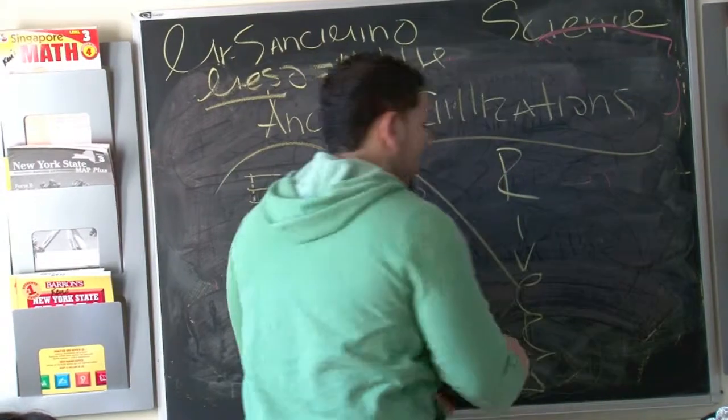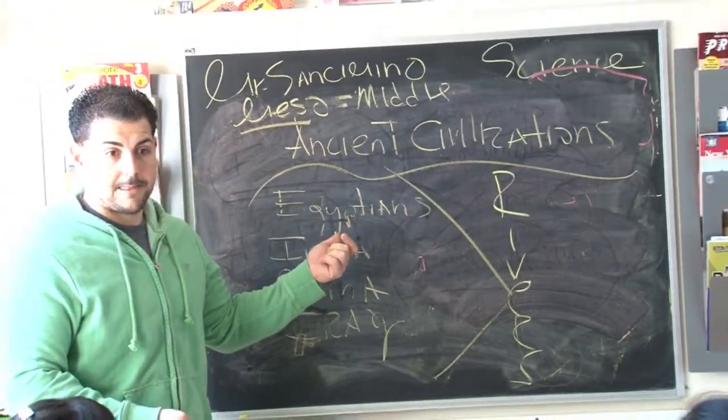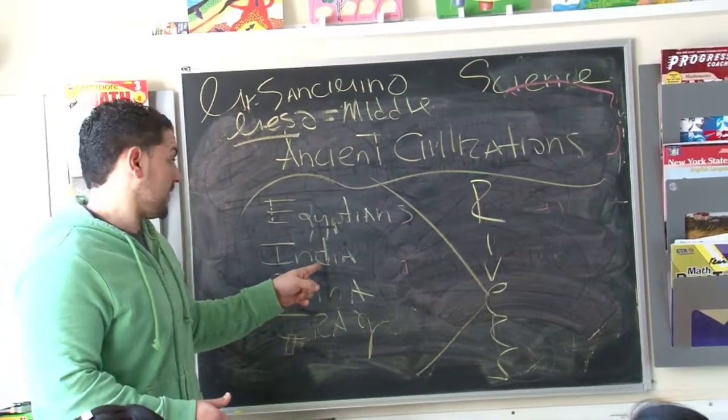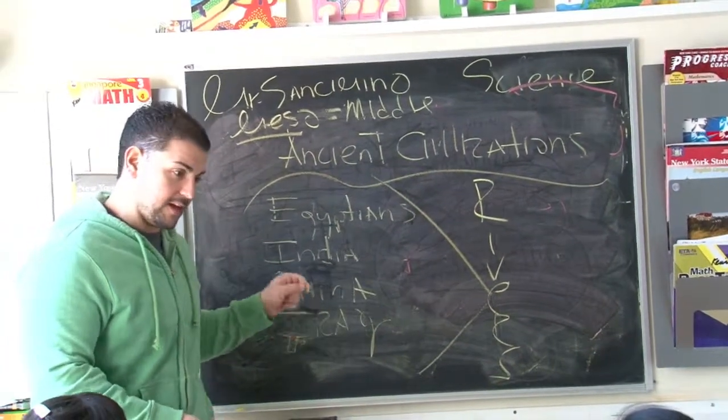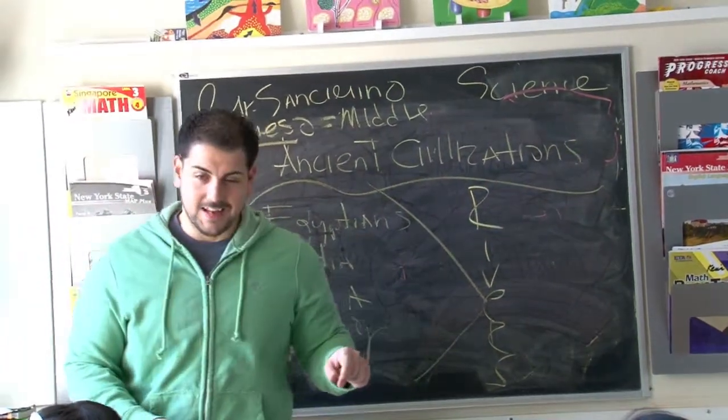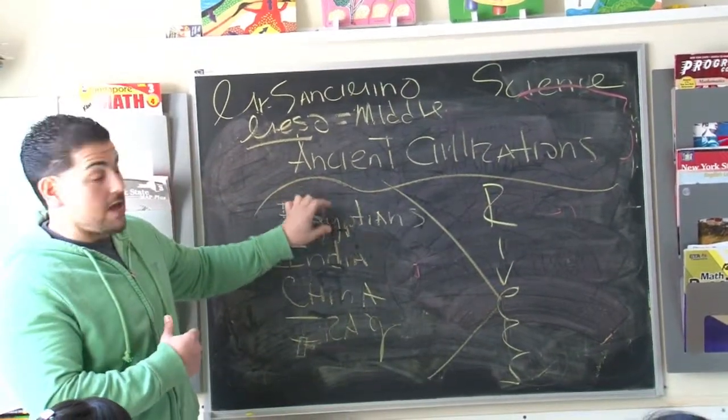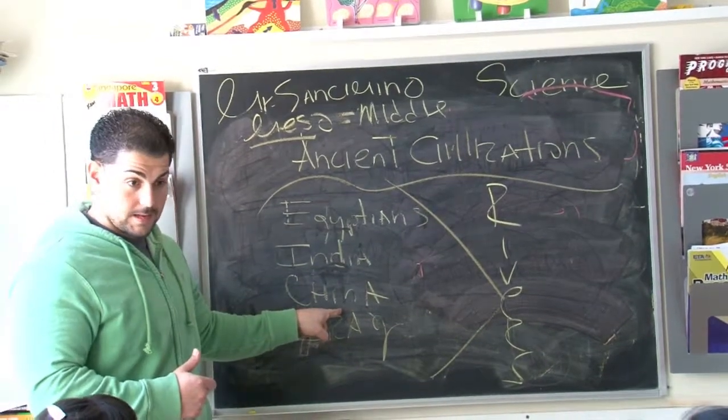What's the name of the famous river in Egypt? Nile. What's the famous river in India? There's a clue in the word - it's named after India. Egyptians have the Nile River, Indians have the Indus.